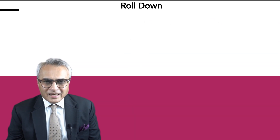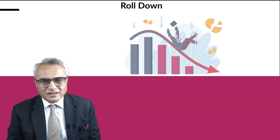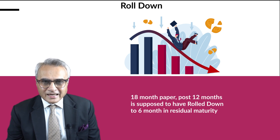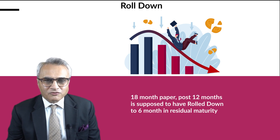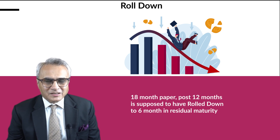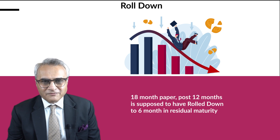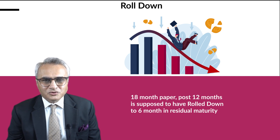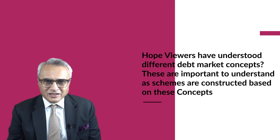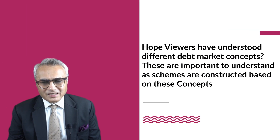What is roll down? In mutual fund debt parlance, an 18-month paper after having completed 12 months is supposed to have rolled down to 6 months in residual maturity. A 36-month paper after 18 months have been completed has rolled down to 18 months in residual maturity, and so on. That is what we call roll down in the mutual fund debt parlance. Hope viewers have understood the meaning of some of the concepts of debt markets.